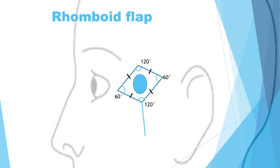After this, you extrapolate a line going down from the 120-degree corner, and this line will be the same length as all sides of your rhomboid. Then you draw a parallel line, parallel to one of the sides of your rhomboid, also equal in length to all sides of your rhomboid. All these lengths would be the same as the distance between the two corners of the 120-degree angle.